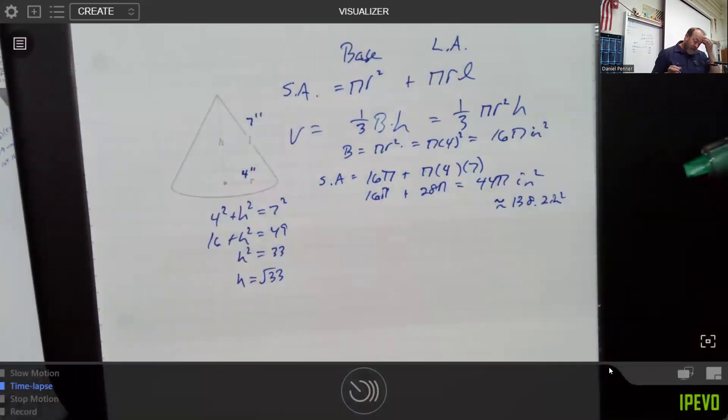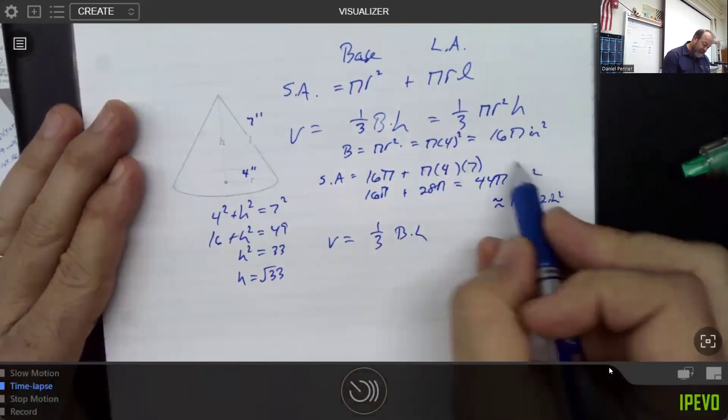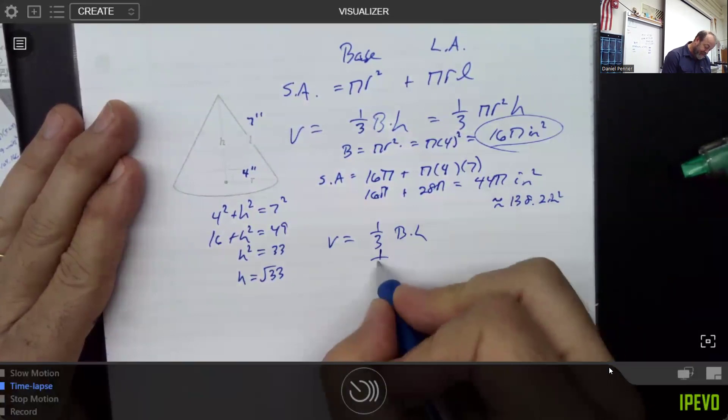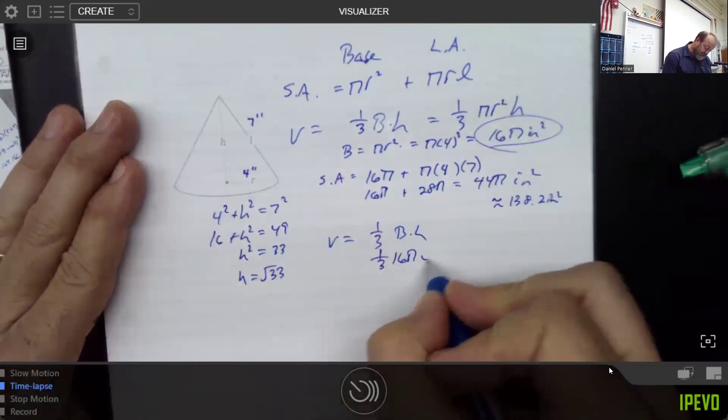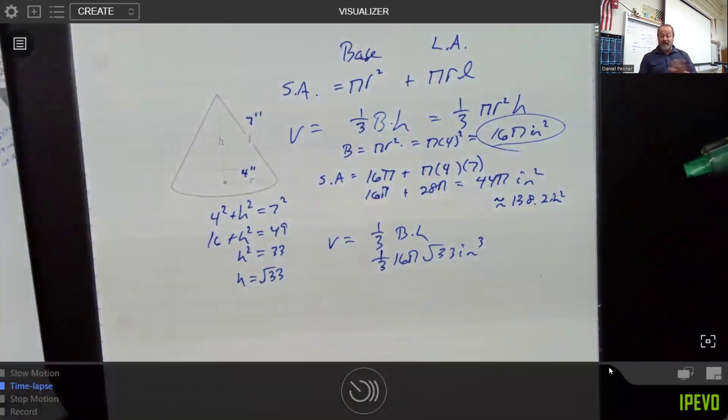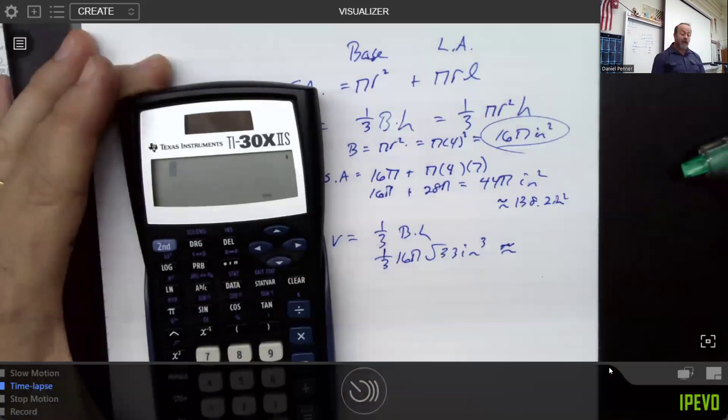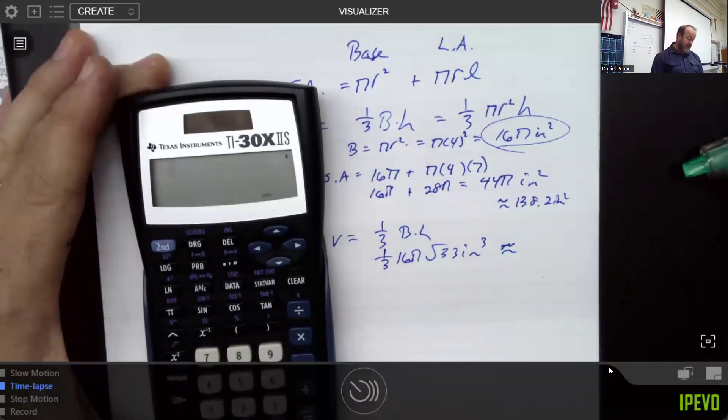But what we could do then is we could leverage that a little bit further and then say that the volume is one third that base times that height. But I've already found that that base is 16 pi. And the height is root 33. And quite literally, we're done right there. We could walk away from the problem right now because it's a very crazy, irrational value. But of course, that doesn't feel comfortable to most people.